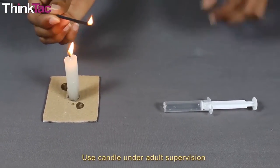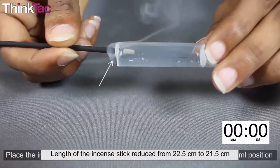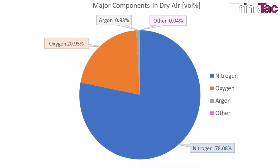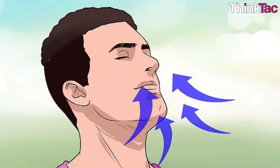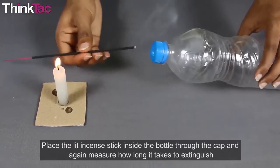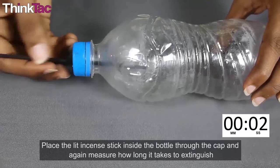By means of this simple experiment, you have understood that air is required for combustion — more specifically, it is the oxygen present in air that sustains combustion. We will now understand the conceptual details behind the composition of air and the process of combustion. A knowledge of these details will help us understand how to use various components of air for human benefit.